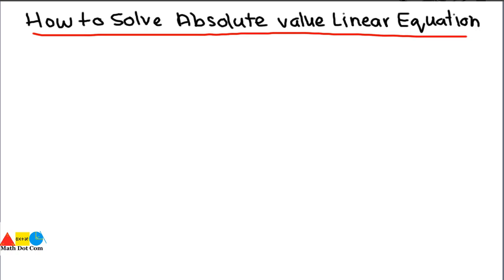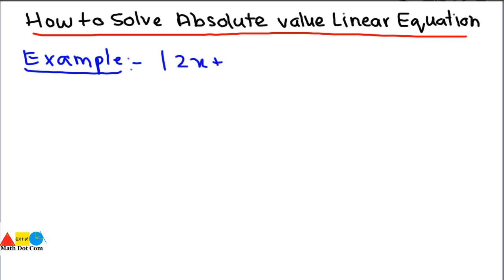Today we are going to discuss how you can solve linear equations involving the absolute value. We will start with an example and follow a step-by-step method. If you are asked to solve the equation |2x + 4| = 11, let's start from step number one: isolate the absolute value expression on one side of the equation.